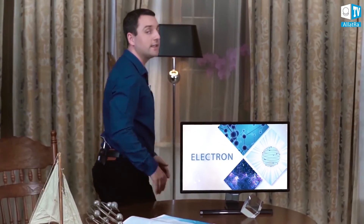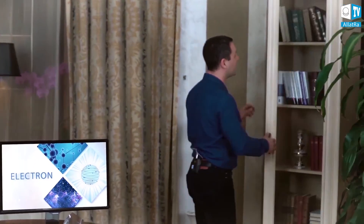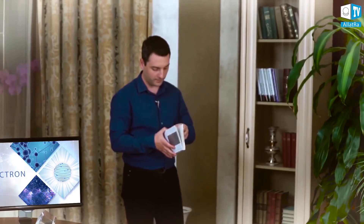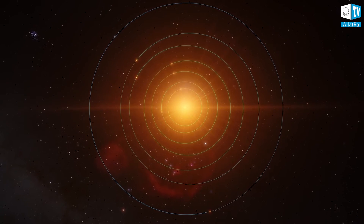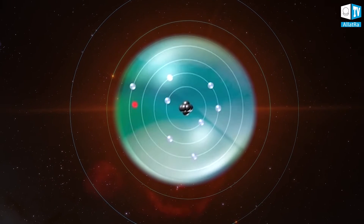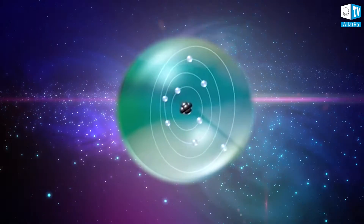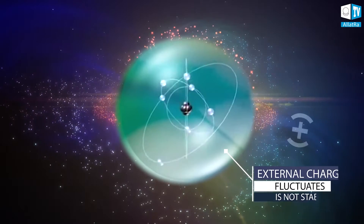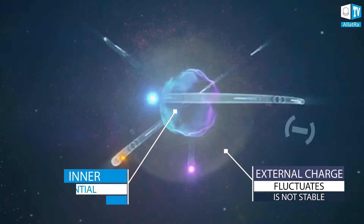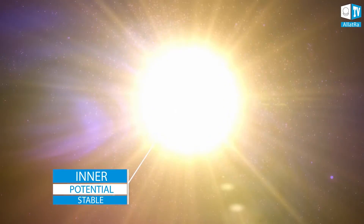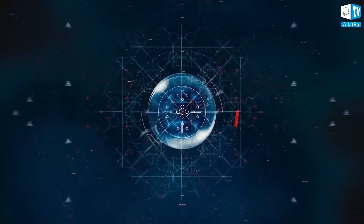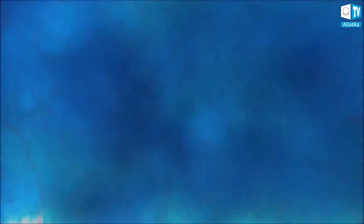It is the difference between the inner potential and the external charge that creates such orbitals — both for planets around the Sun and electrons around the nucleus. Otherwise, the orbits would stick together or scatter and would never have stationary orbits. Since external charge fluctuates and is not stable in contrast to internal potential, an external charge cannot create stationary orbits without involvement of a stable internal potential. All material objects have internal potential, starting from a quark right up to stars — otherwise, they would not be material.